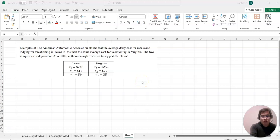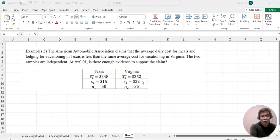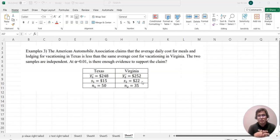Hello everyone, welcome to happymed.com. This time we continue to cover two sample hypothesis testing for the larger sample case. Please look at this example: The American Automobile Association claimed that the average daily cost for meals and lodging for vacationing in Texas is less than the same average cost for vacationing in Virginia. The two samples are independent.